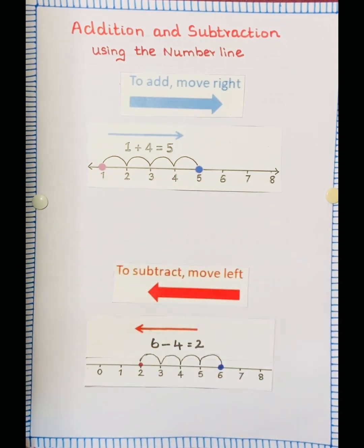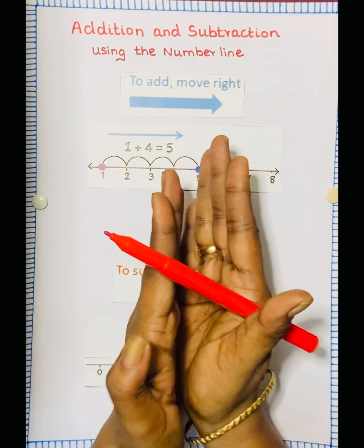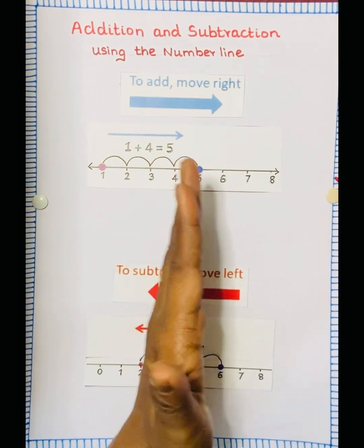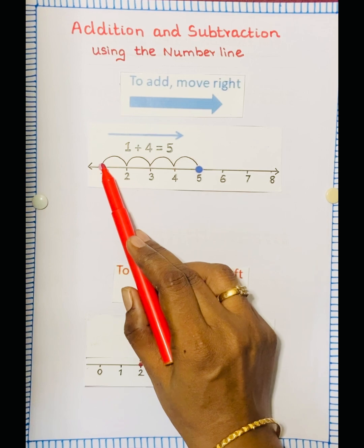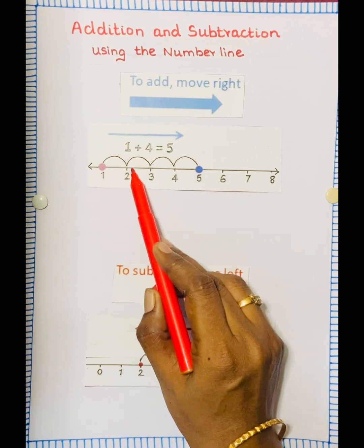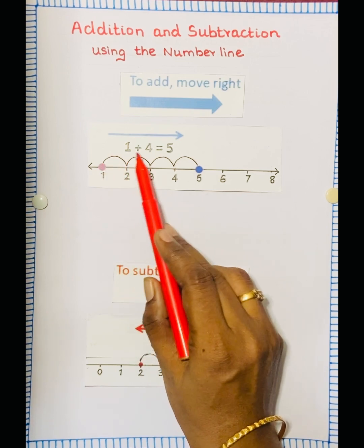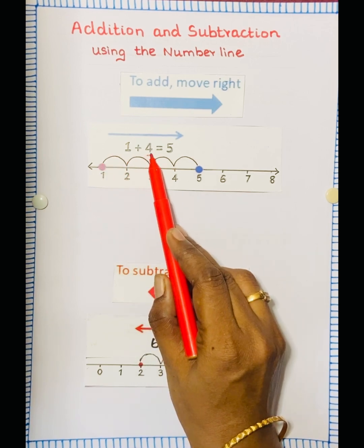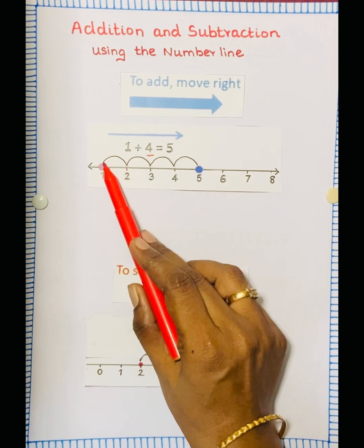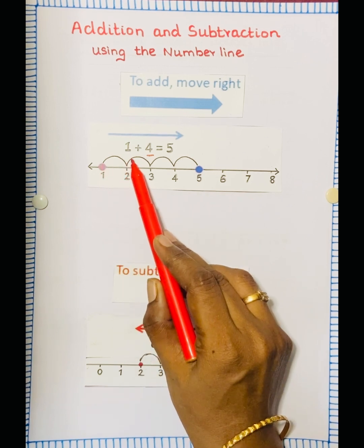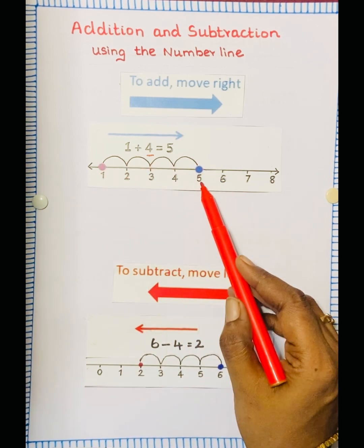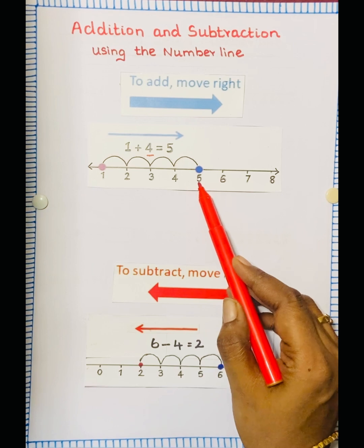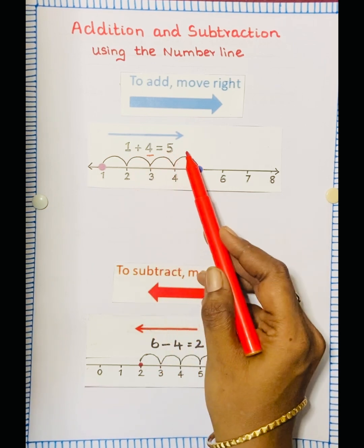This is your right side and this is your left side. So starting at 1, we have to keep moving to the right side. 1 plus 4 — see the number 4, make 4 jumps: 1, 2, 3, 4. See the number 5. So 1 plus 4 is equal to 5.